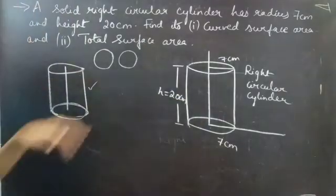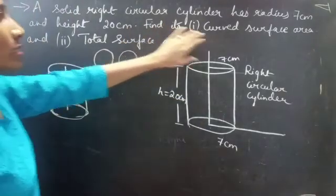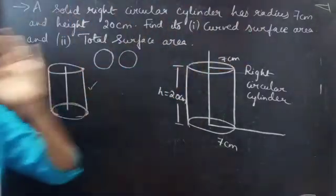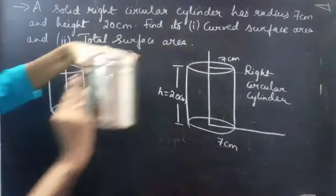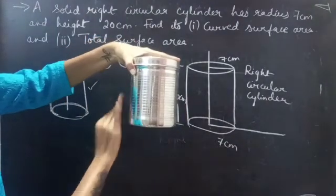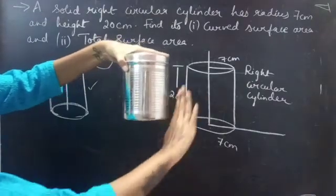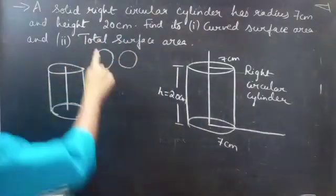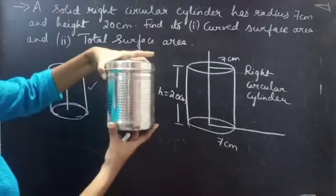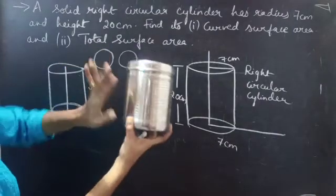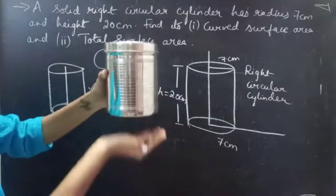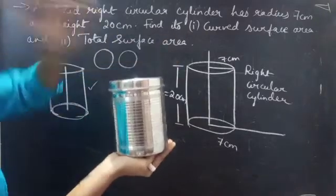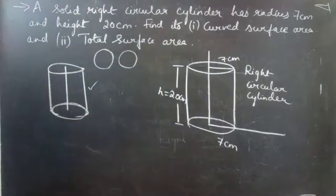So here we have to find the curved surface area — only the curved surface area. I will also find the total surface area. In the total surface area, we will get curved surface area plus the base and the top.